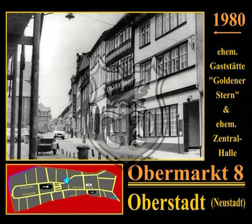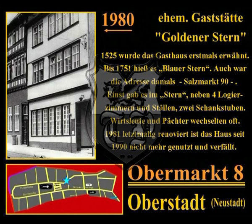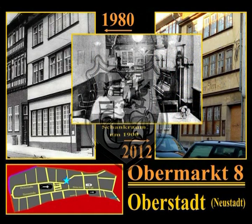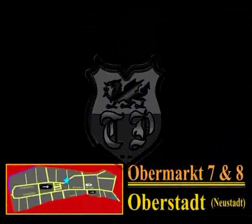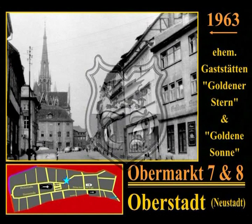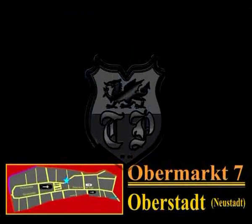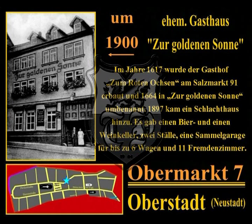Gleich nebenan am Obermarkt 8 befand sich die Gaststätte zum Goldenen Stern. 1525 erstmals erwähnt, hieß sie bis 1751 Blauer Stern; die Adresse lautete damals am Salzmarkt 90. Einst gab es im Stern neben vier Logierzimmern und Ställen zwei Schankstuben; Wirtsleute und Pächter wechselten sehr oft. 1981 letztmalig renoviert, ist das Haus seit 1990 nicht mehr genutzt und verfällt. Neben dem Stern am Obermarkt 7 war das Gasthaus zur Goldenen Sonne; jahrelang existierten alle drei Gasthäuser – die Zentralhalle, der Stern und die Goldene Sonne – nebeneinander und konnten über Mangel an Gästen nicht klagen.